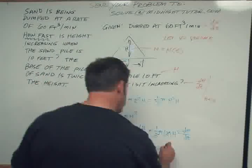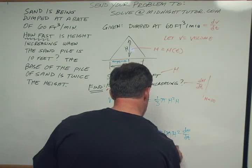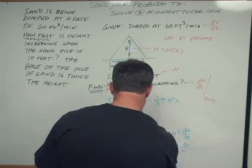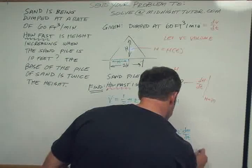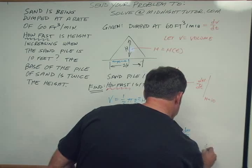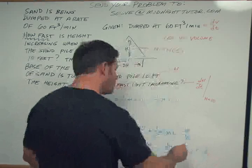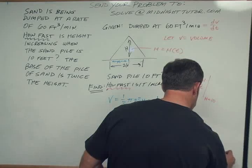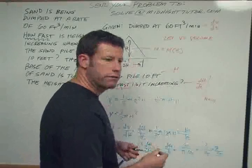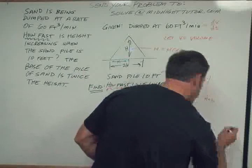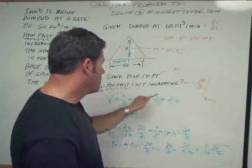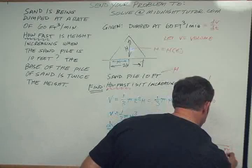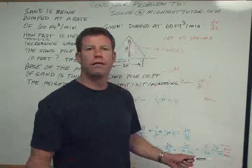And now if I just kind of rearrange terms in my head, I've got 60 divided by π divided by 10², which is 100, which is 6 over 10π or 3 over 5π. And that is the answer. Now is it the complete answer? No, because we wanted a rate, feet, minutes, so this is going to be feet per minute. Now I have the total answer.